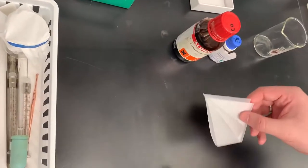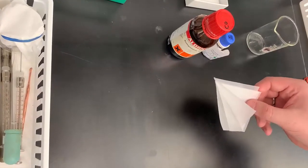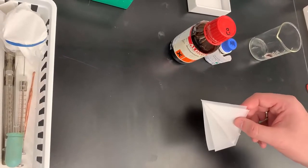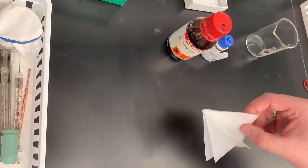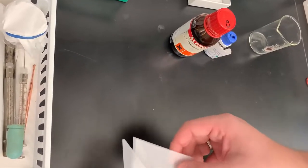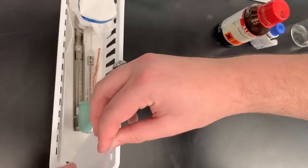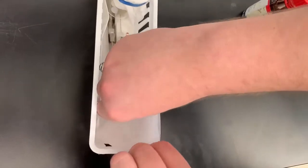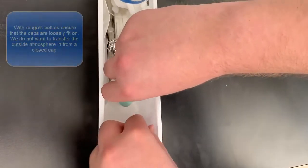Next, you'll want to put in any weigh paper you might need. You will need one for our solid base and then at least one extra for any solid reagents that you might have. It's good to tuck these under something heavy so they don't fly out when you evacuate the chamber.